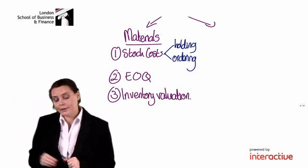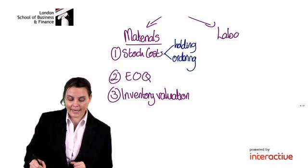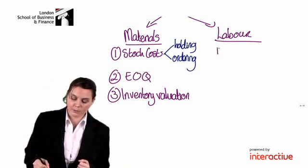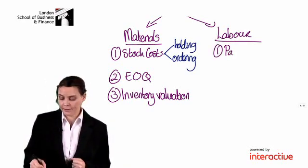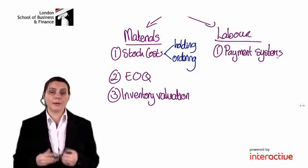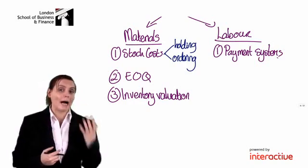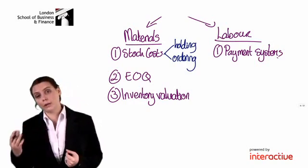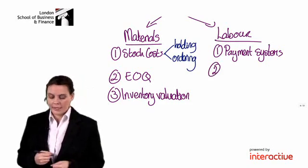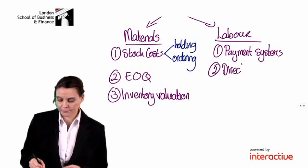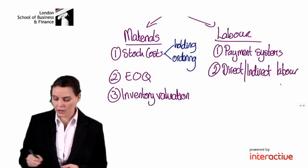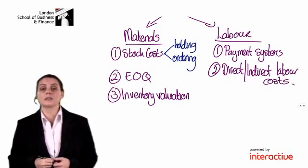Those are the key areas in our material costs. In labor, this is quite a straightforward section. Two key things: number one, the different payment systems — we might pay production line workers per hour worked or on a piecework basis, paying them per unit produced. The second area is understanding which labor costs are direct and which are indirect.